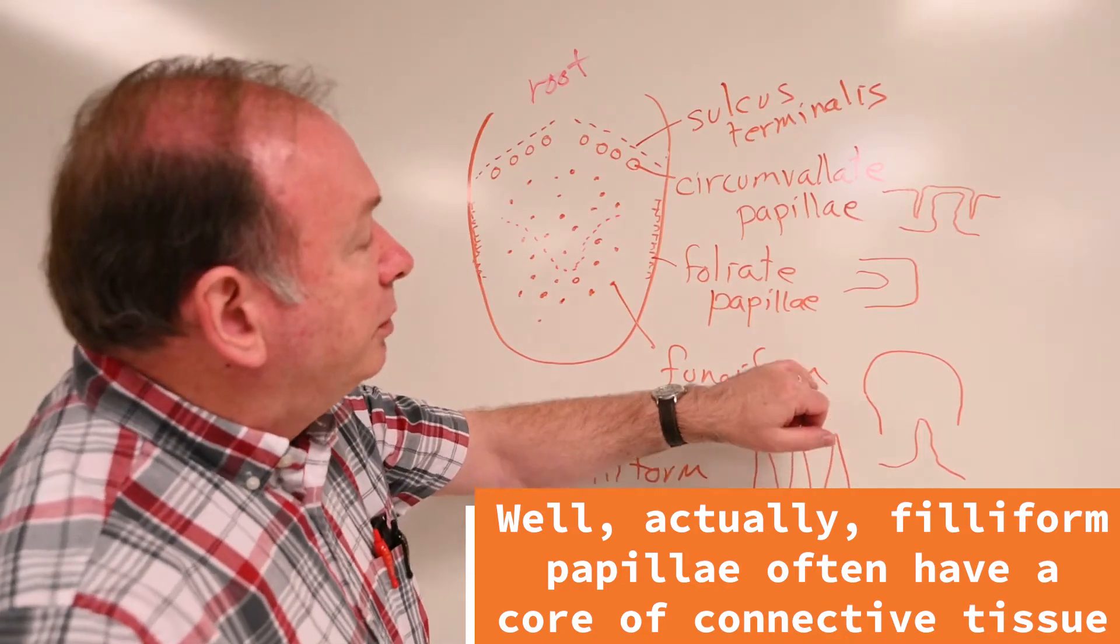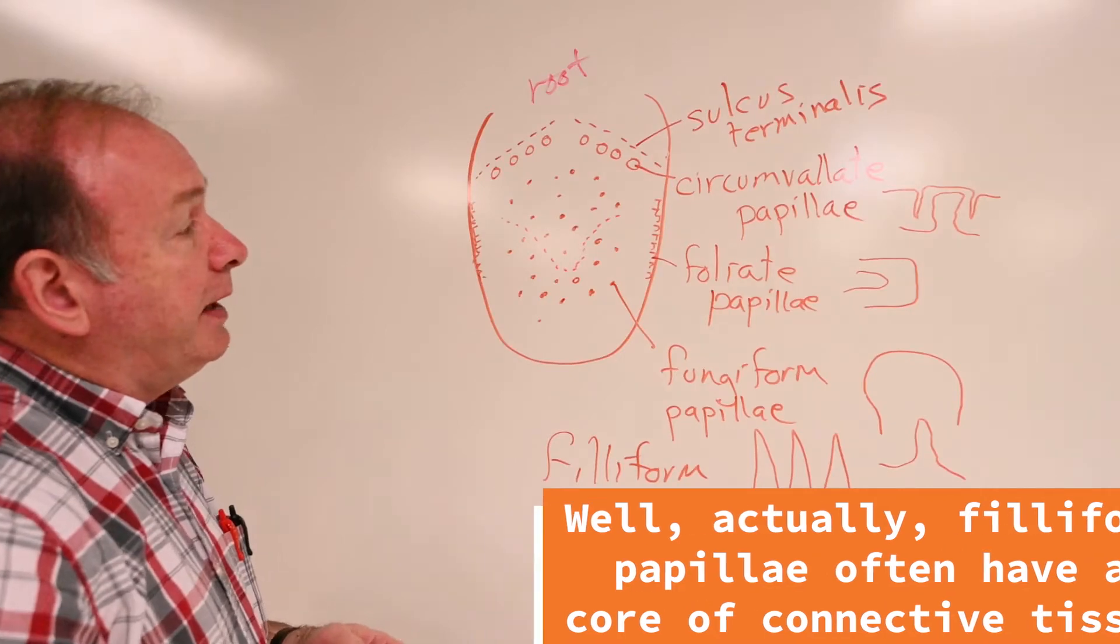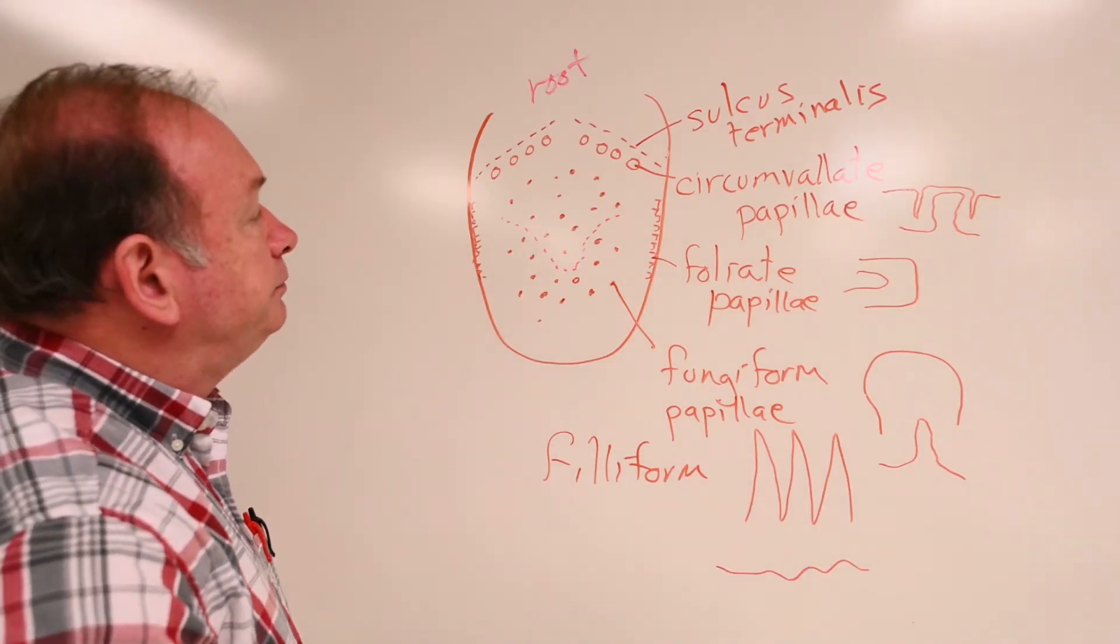Some of the fungiform do, foliate papillae will, and circumvallate certainly have that core of connective tissue in the papillae.